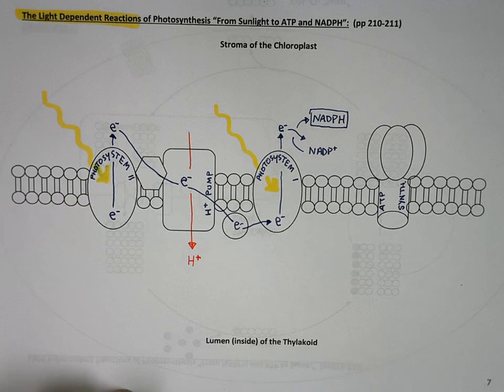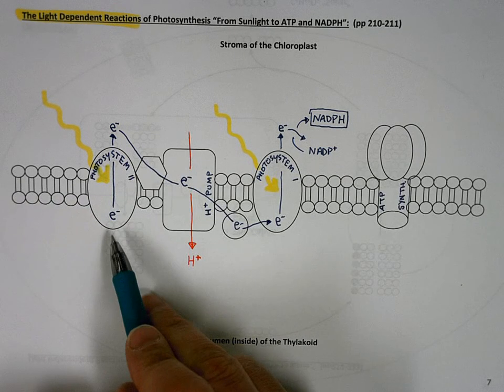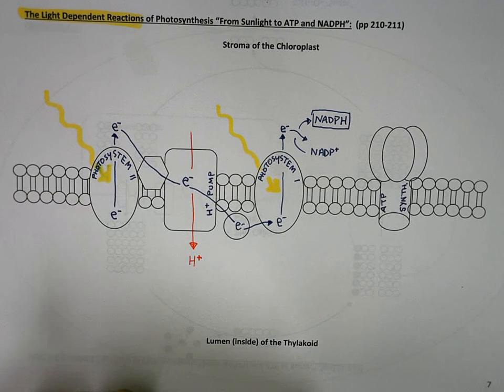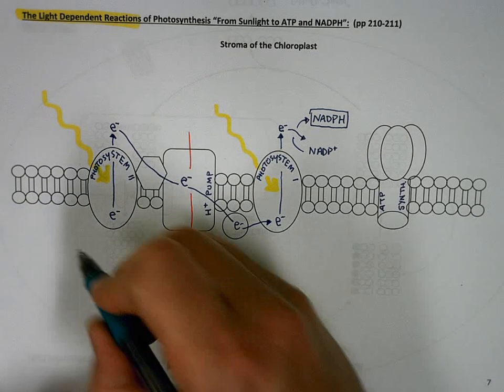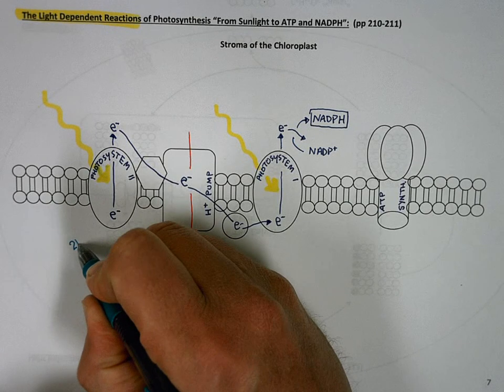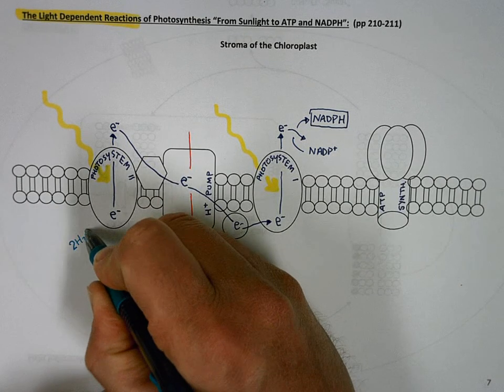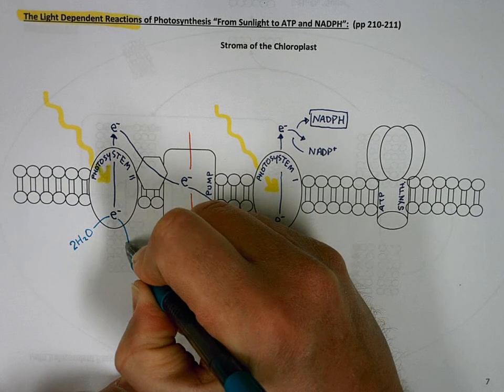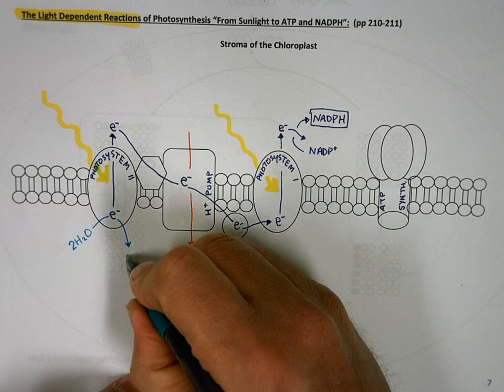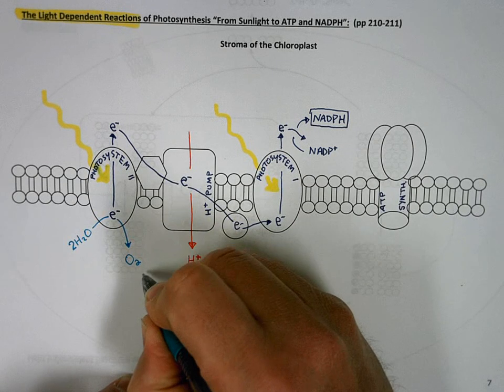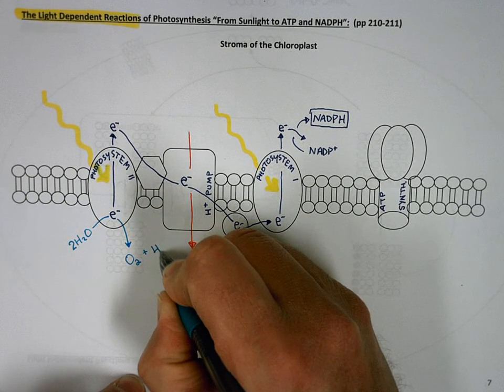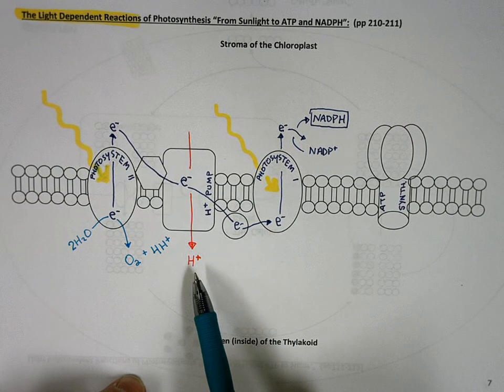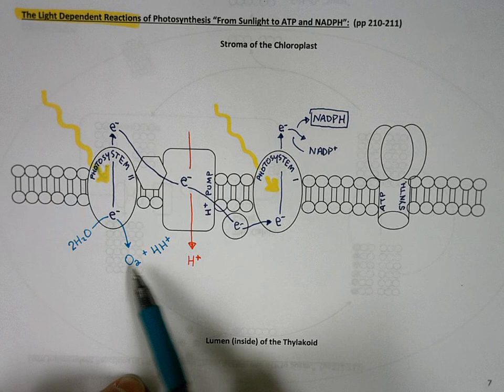Now, you might say, hey, if photosystem two lost an electron, how do you replace that electron that was lost? Well, you split water. So, over here we'll say we take a couple of water molecules, donate their electrons, which causes them to fall apart into oxygen gas and four hydrogen ions. You can see that hydrogen ions are building up inside the thylakoid lumen because you're splitting water and you're pumping them in there.